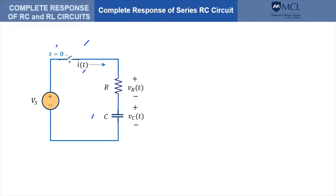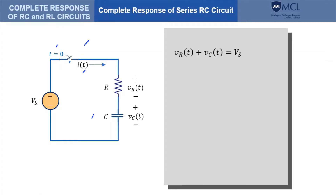It is sometimes convenient to solve first for the voltage across the capacitor for a series RC. To solve this voltage, we apply Kirchhoff's laws. Since this is a single loop, we don't need the KCL. So we perform a KVL around the loop. The sum of the voltages equals zero. By Ohm's law, we can express the voltage across the resistance as IR. And we already know the relationship of the current through a capacitor and its voltage from that equation.